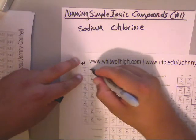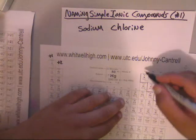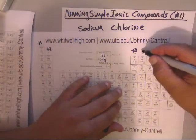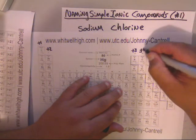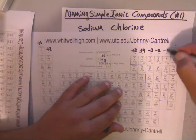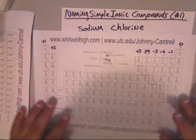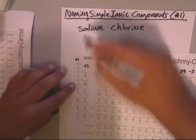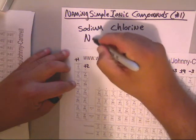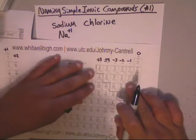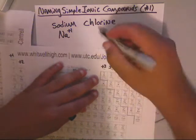Anything in the first column is plus one, anything in the second column is plus two, and everything in the third column is plus three unless there are exceptions. Then you have plus or minus four, negative three, negative two, negative one, and zero. These are the charges on the periodic table. Sodium is in the first column, so the sodium ion is Na⁺¹. Chlorine is in column 17 and has a negative one charge, so you write Cl⁻¹.